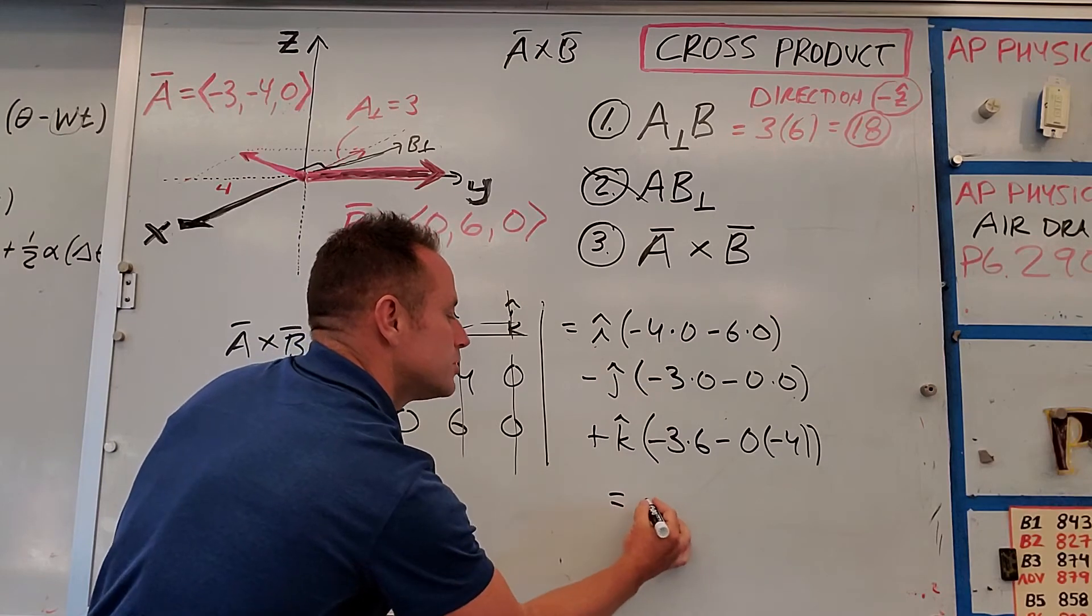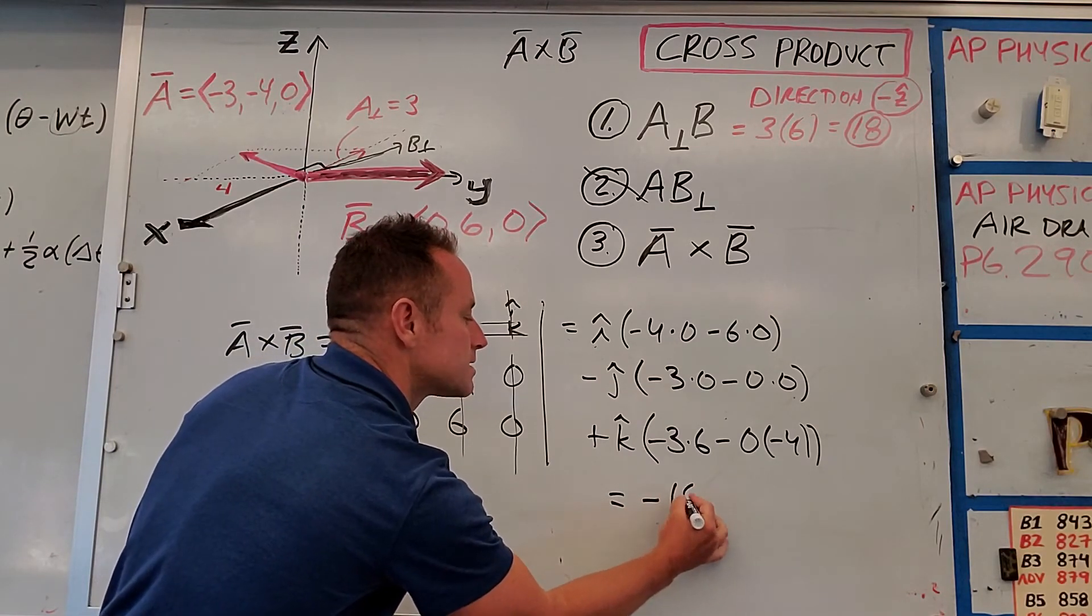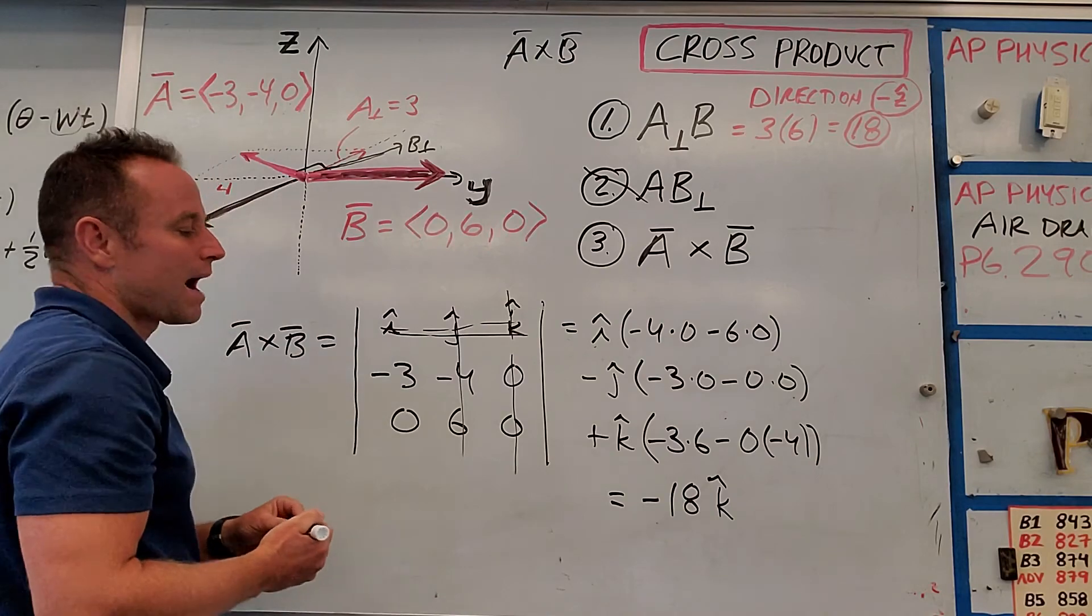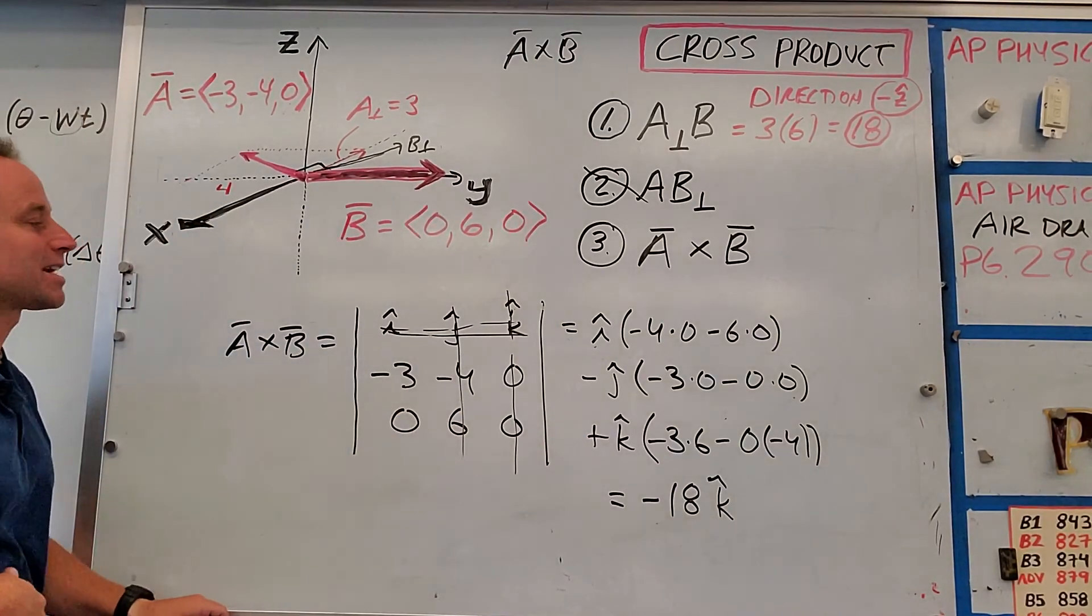And you can see here we get our minus 18. So when the smoke clears, you get that the cross product is minus 18 K hat or minus 18 Z hat if you wanted to use XYZ notation.